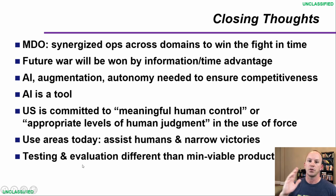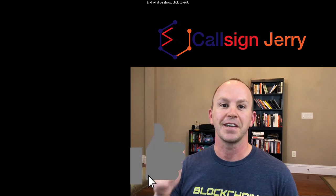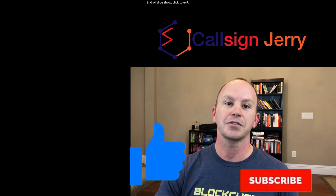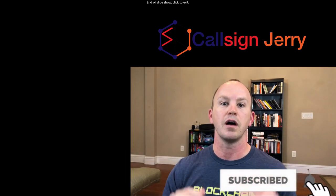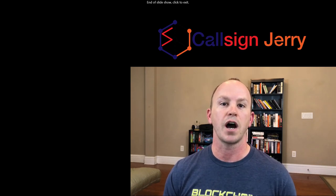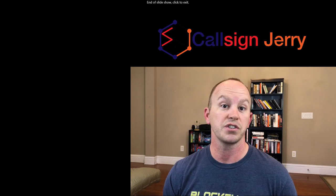Use areas today are: where can we improve human decision making and human action? Where should we seek those small victories and build on each other so that we eventually eat that elephant? And don't overlook testing and evaluation. Thanks guys — if you like this video give it a thumbs up, hit subscribe, and I'd love comments on what you liked, what you didn't, and how I can improve for future videos.